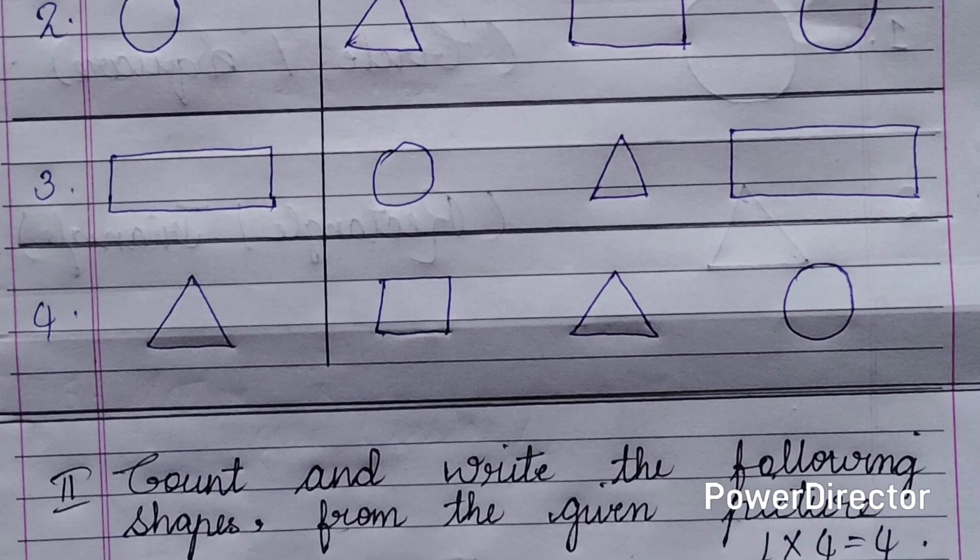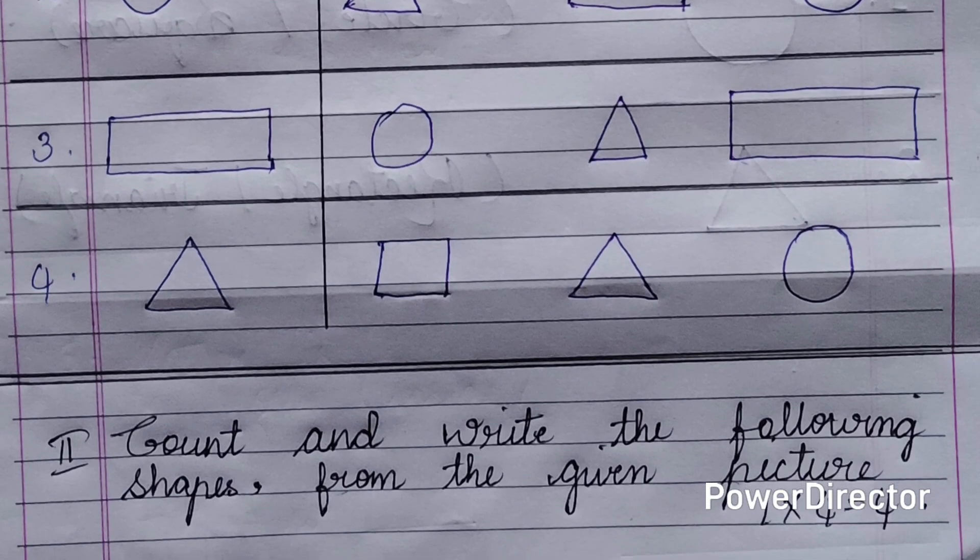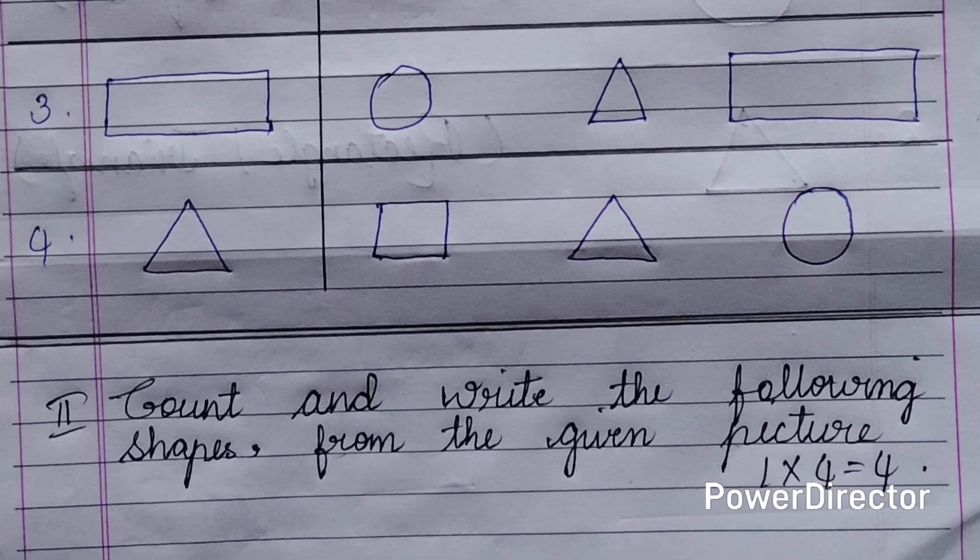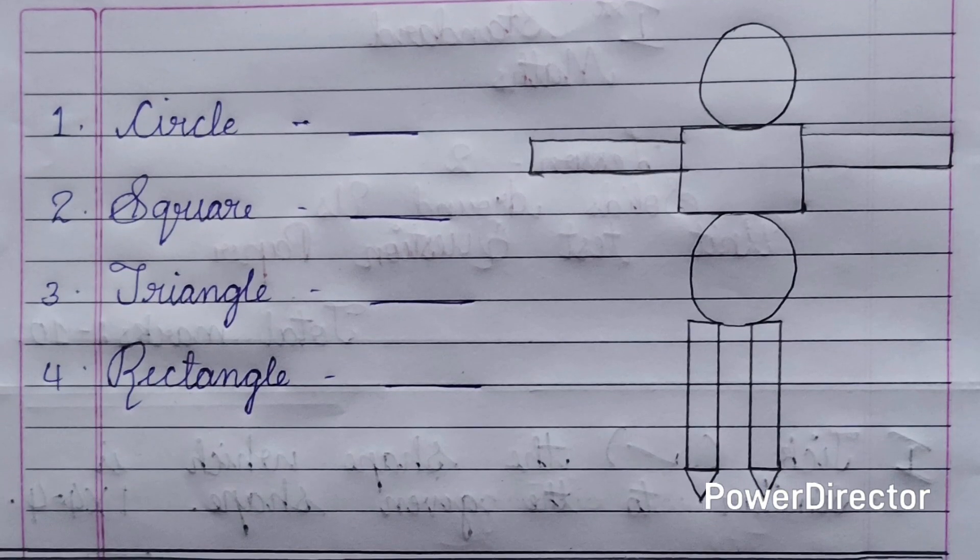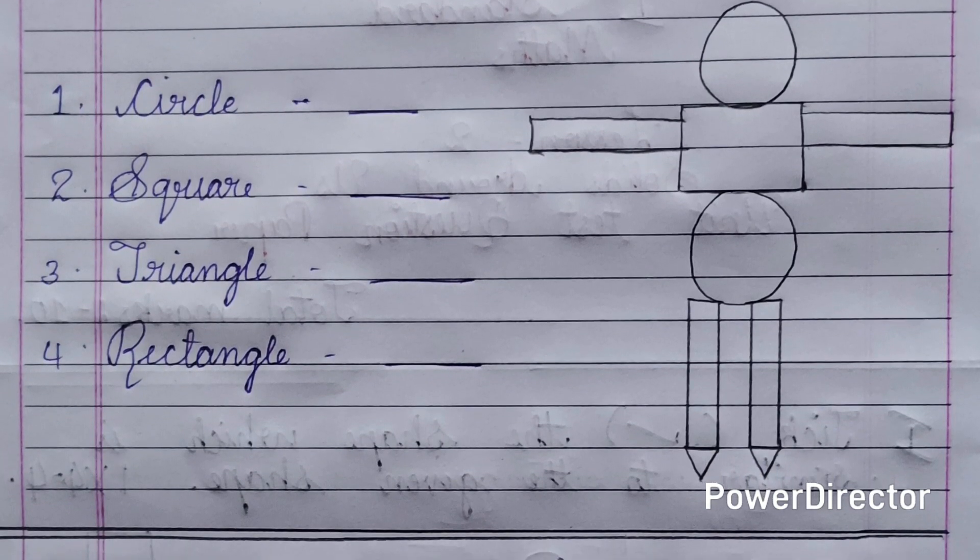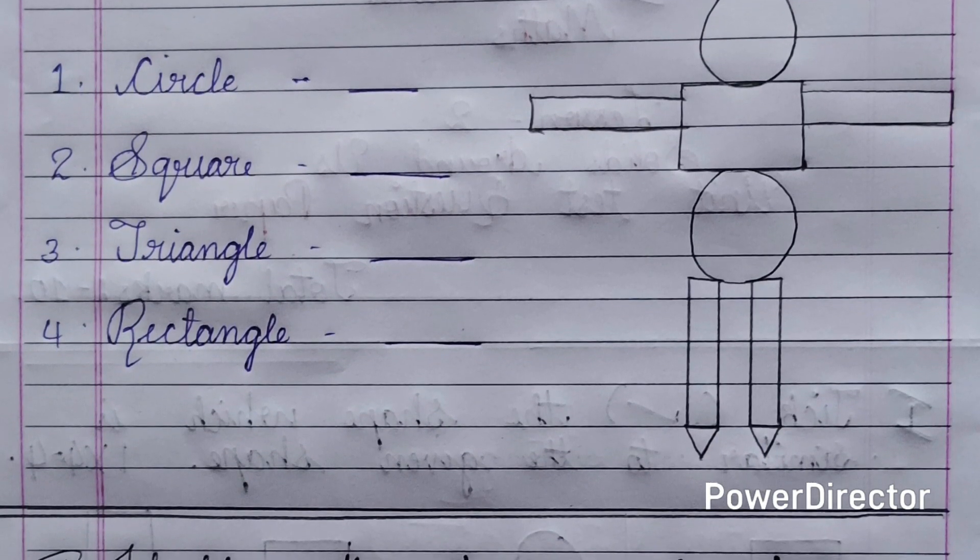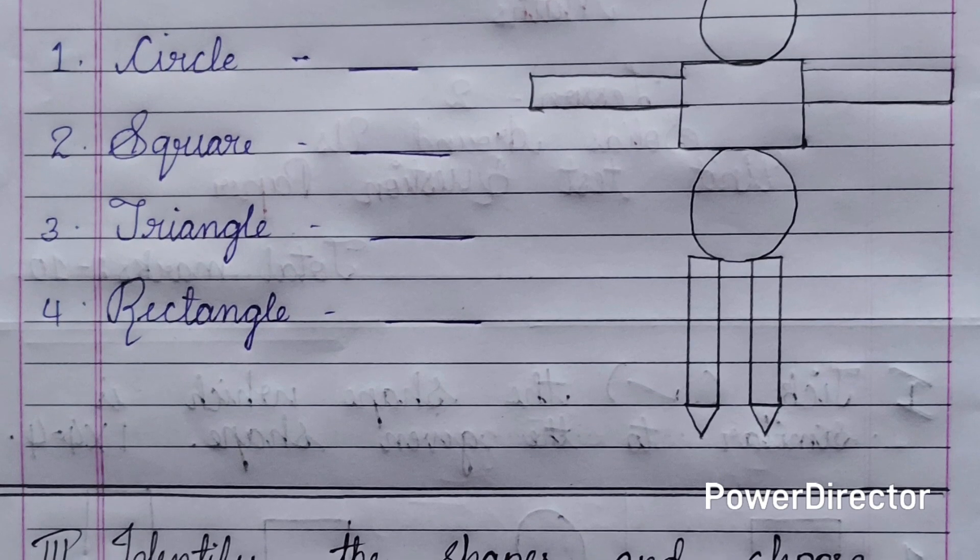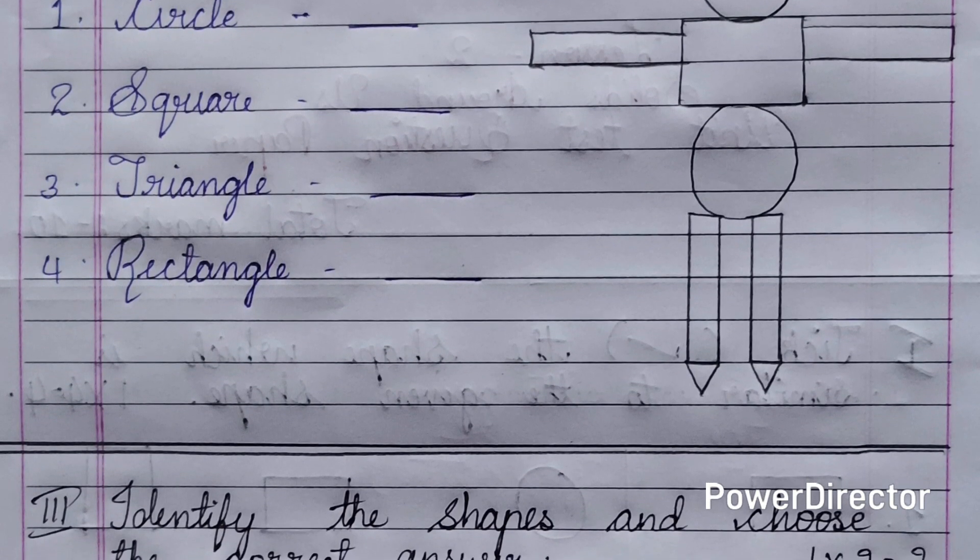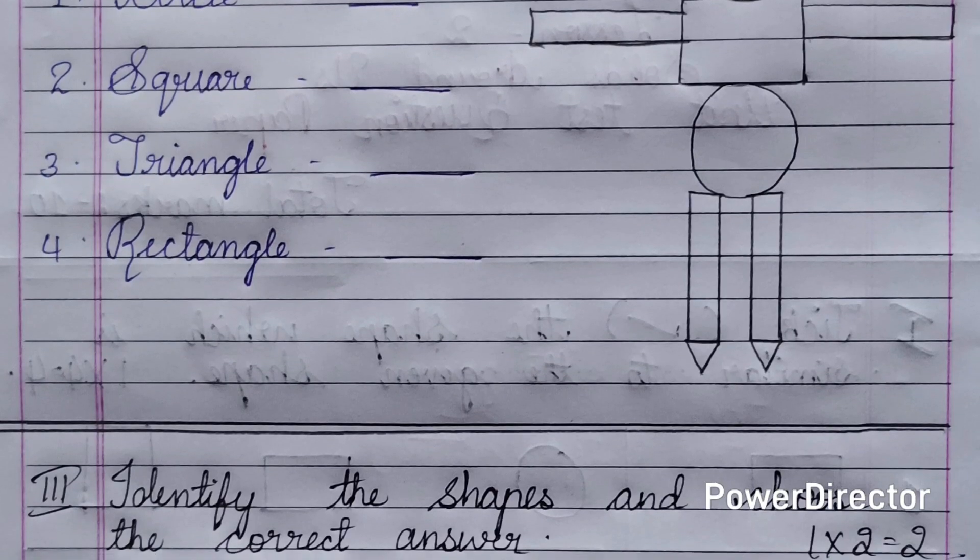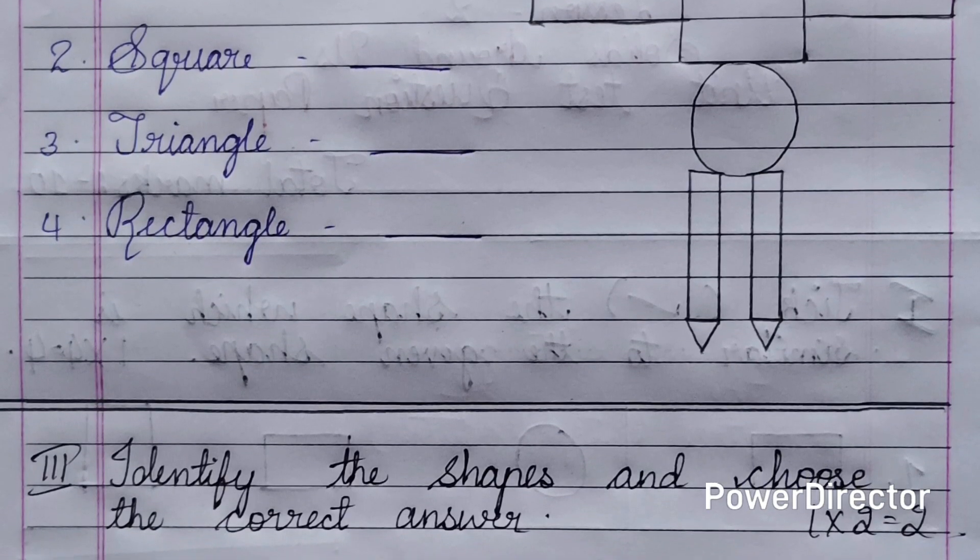The second main question is: count and write the following shapes from the given picture. There are four questions, each carrying one mark, for four marks total. Here you can see a picture with different shapes. From this picture, you need to count circles, squares, triangles, and rectangles, and write the numbers there.